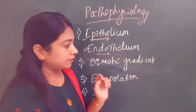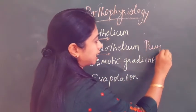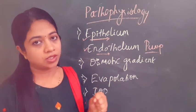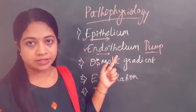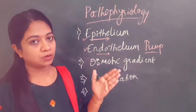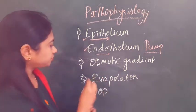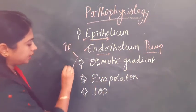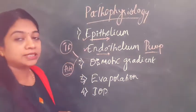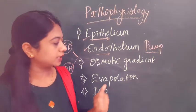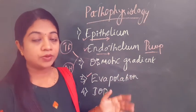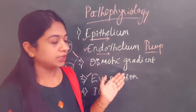Secondly, there is a very important pump mechanism acting at the endothelium — the sodium-potassium ATPase pump — which constantly drives water out of the cornea, keeping it in a state of dehydration. The osmotic gradient present between the tear film and the cornea, and between the aqueous humor and the cornea, also constantly drives fluid out. Both the tear film and aqueous humor are concentrated compared to the corneal stroma, and this osmotic gradient is made use of in treatment using hypertonic solutions.